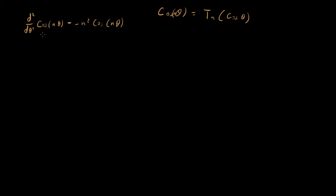This statement right here is equivalent to saying: the second derivative with respect to theta of T sub n of cosine theta is equal to minus n-squared times T sub n of x.